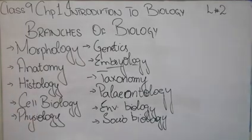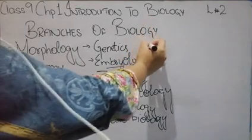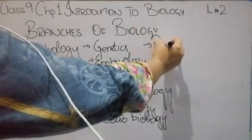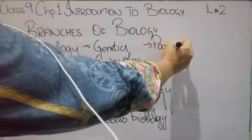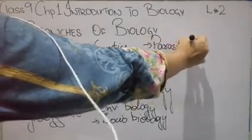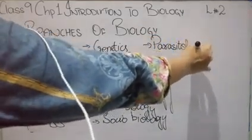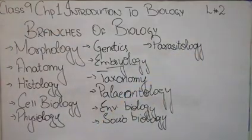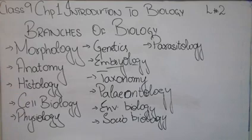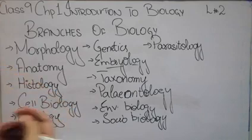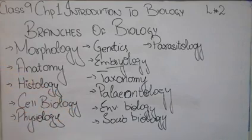The next branch is parasitology. The word comes from 'parasite.' Parasites are living organisms that do not prepare their own food but instead attack different living organisms, harming them and obtaining food from them. These are called parasites. Examples include organisms found in dogs, sheep, goats, and leeches found in water that suck blood from other organisms.